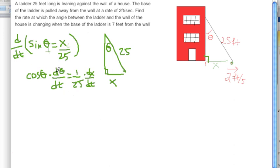Let's solve this just to make it look a little neater for what we're going for. Remember, we're going for the rate of change of theta with respect to time. Let's get this cosine theta to the other side, so we get dθ/dt equals 1 over the cosine of theta times 1 over 25 times dx/dt.